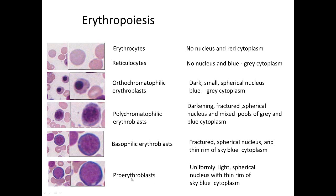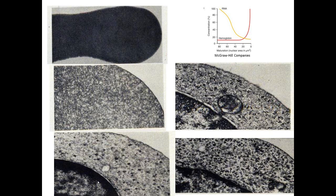In contrast, the pro-erythroblast has a homogeneous nucleus — it has not fractured yet — but still has a thin rim of very blue cytoplasm and a spherical nucleus. Looking at ultrastructural features: the mature red blood cell has hemoglobin; the reticulocyte has a little bit of ribosomes; the orthochromatic erythroblast has mostly hemoglobin with some ribosomes left; the polychromatic has a mixture of ribosomes and hemoglobin; and the basophilic and pro-erythroblast have lots of ribosomes and not much hemoglobin.